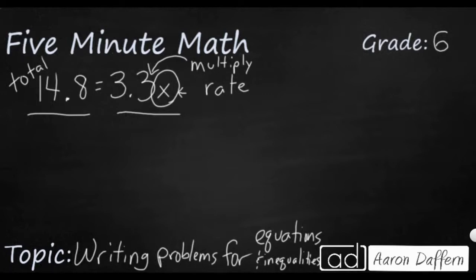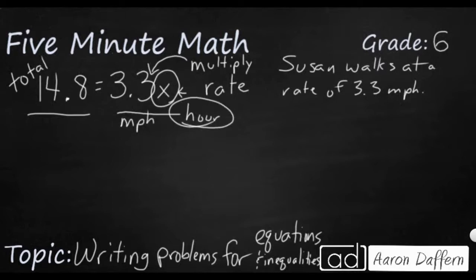So we can write something similar to that. We can say, let's see, 3.3, that's about a good walking rate. So we will say Susan walks at a rate, because rates are used in multiplication, of 3.3 MPH. And so our x then is going to be our hours. So she's going to walk at 3.3 miles per hour. How many hours is it going to take to get her to our total that's going to be our miles?